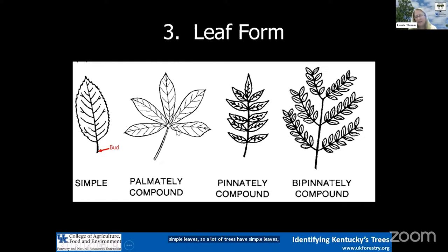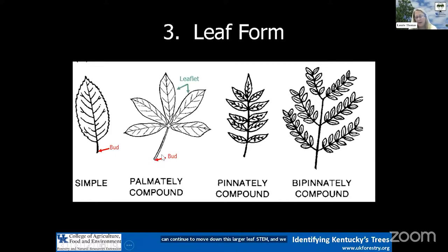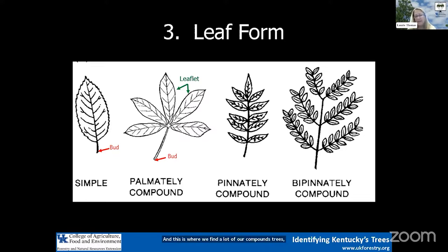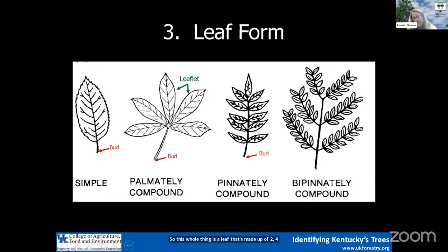But sometimes you walk up to a tree and look at what you think is the main leaf, look at the base, and find no bud. You continue to move down the larger leaf stem and find the bud is all the way down. What you have is a palmately compound leaf — shaped like your hand — and what we thought were leaves are actually called leaflets. An example is our buckeyes with palmately compound leaves. The next one is pinnately compound, like a feather. You look at the base of each leaflet and find no bud, moving down until you find the bud all the way at the bottom — like black walnut or hickories.